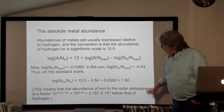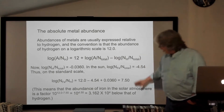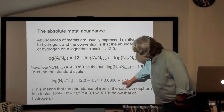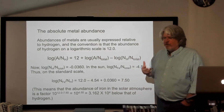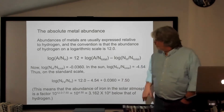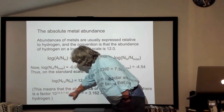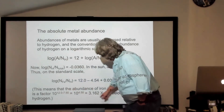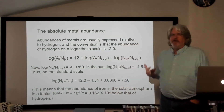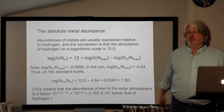So the logarithm of the total number of iron atoms with respect to hydrogen atoms in the sun is 7.50. If I want to figure out what ratio that actually corresponds to, I take 10 to the power of (12 minus 7.50), which is 10 to the 4.50, or about 3.16 times 10 to the 4th. That means there is roughly 1 iron atom per 30,000 hydrogen atoms in the sun. This is a strange way of talking about things the first time you see it.